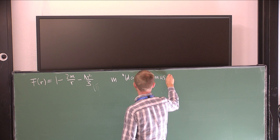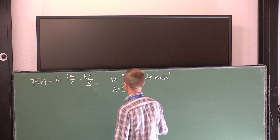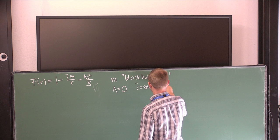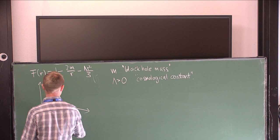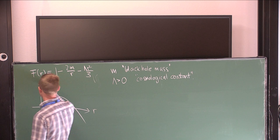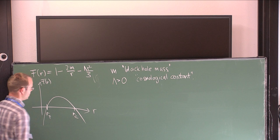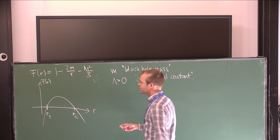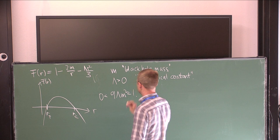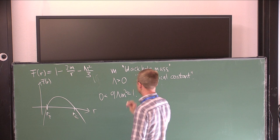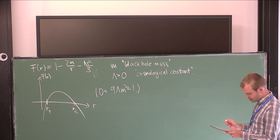The graph of this function F has two simple roots R+ and R_C. You can do a calculation and realize that F has two simple positive roots under a certain condition on the mass and the cosmological constant — namely that λM² lies between zero and one-ninth. These are physical restrictions.